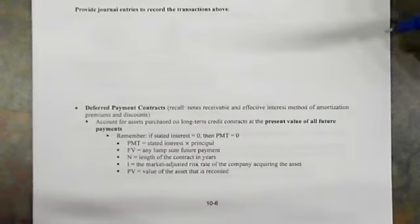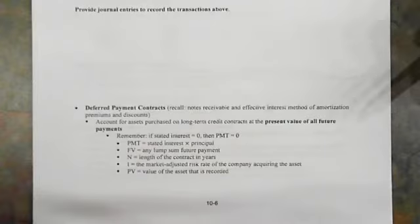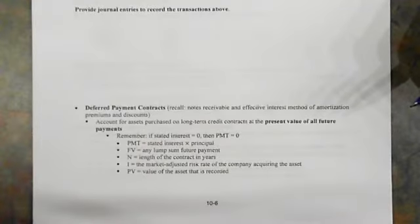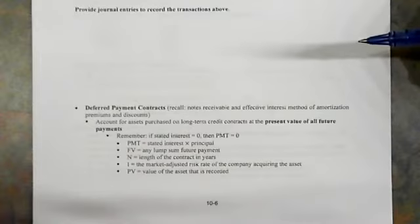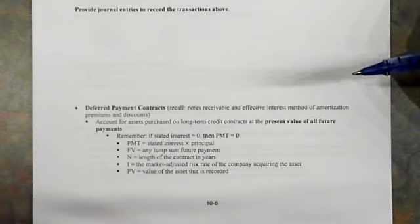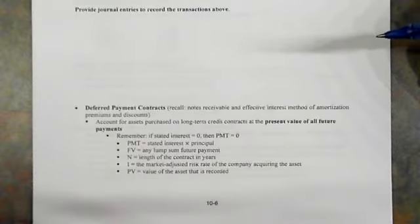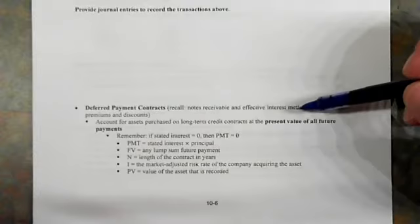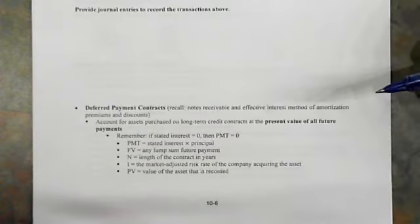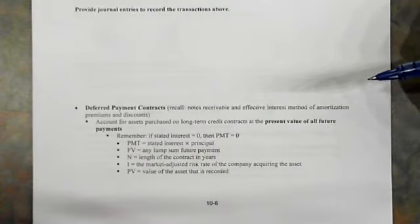One means we have in acquiring a new asset is to use what we call a deferred payment contract. When we use a deferred payment contract, it's going to be quite similar to what you covered in the prior course, thinking about notes receivable, notes payable, bonds payable, and investments. We're going to use the effective interest method in order to amortize premiums and discounts on these notes.